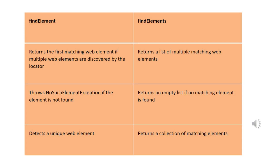findElements is used when you have a few points. If you use findElement, you can find the first matching web element. If you use findElements, you can find all matching elements — it will return a list. If findElement finds no match, it throws a NoSuchElementException. If you use findElements, it returns an empty list instead. The third difference: findElement returns a unique web element, while findElements returns a list of matching elements.